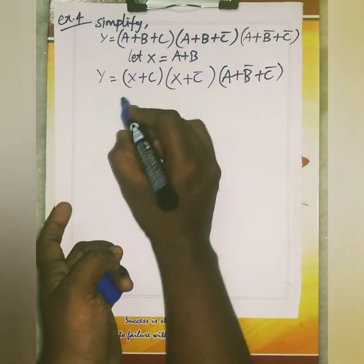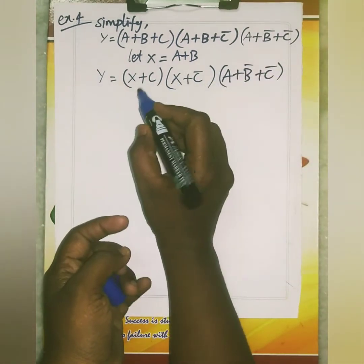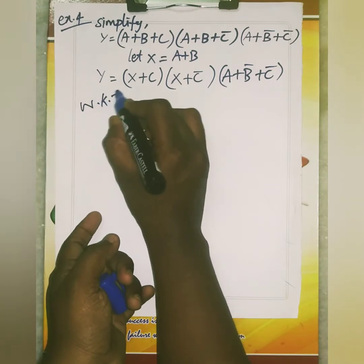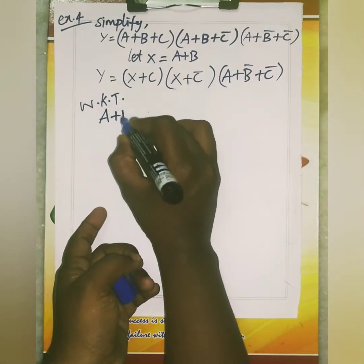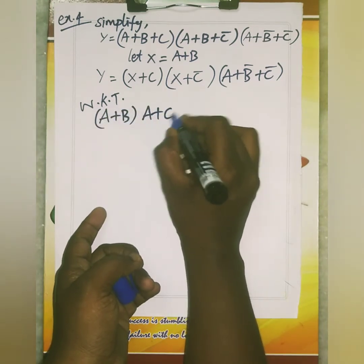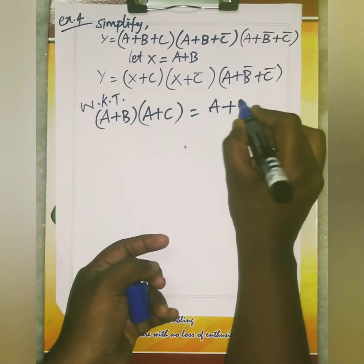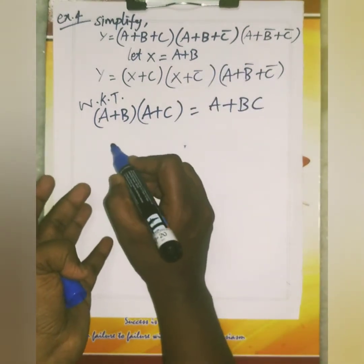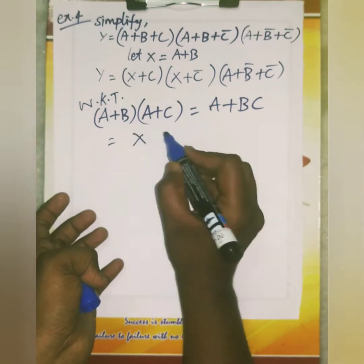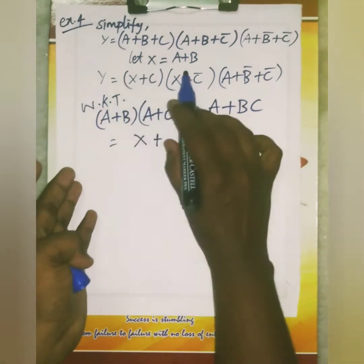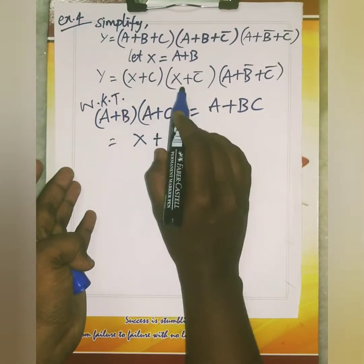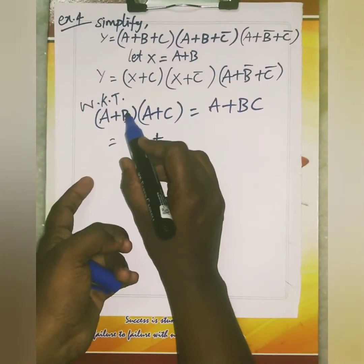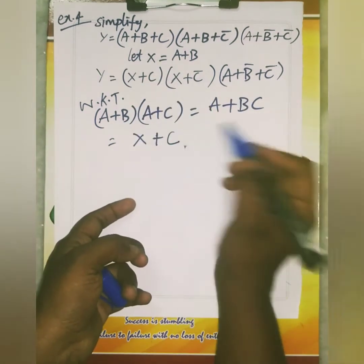Compare these two — it is just like the distributive law. We know that A plus B into A plus C is equal to A plus BC. So we can write X plus C for A, and the answer is A. So here, in place of A we have X, and for BC we have C and C bar.